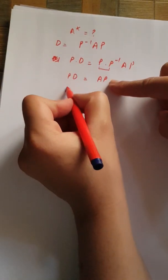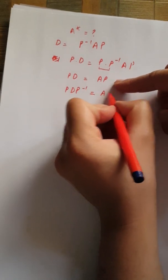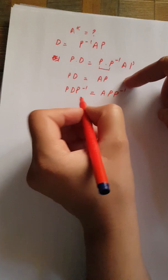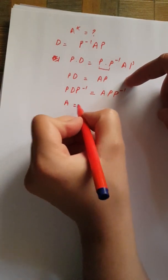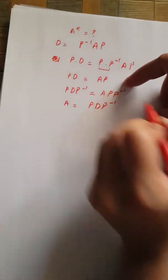Now I need to eliminate P from here, so I will multiply P inverse on the right hand side. Hence, I obtain A equals PDP inverse.